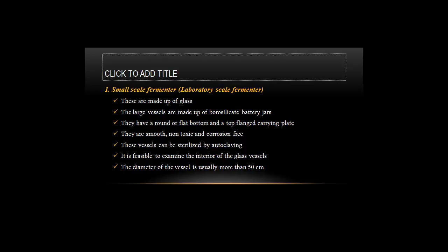Small-scale fermenters are made up of glass; the large vessels are made up of borosilicate battery jars. They have a round or flat bottom and a top flange carrying plate. They are smooth, non-toxic, and corrosion-free. These vessels can be sterilized by autoclaving. It is feasible to examine the interior of glass vessels. The diameter of the vessel is usually more than 50 cm.